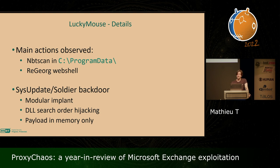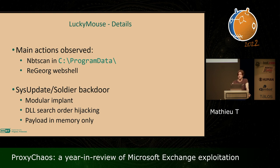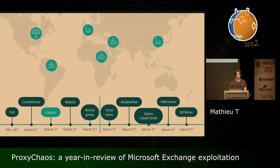The main actions observed on the compromised mail server were that they tried to deploy NBTscan in the ProgramData folder, and they used the ReGeorg web shell. Additionally, they tried to deploy their Sysupdate backdoor, which is a modular implant. The implant is loaded using DLL search order hijacking, and you will never see the payload on disk — it's only encrypted on disk, and the plaintext payload is only in memory. On the same day, Lucky Mouse was quickly followed by Calypso, who compromised the email servers of governmental entities in the Middle East and South America.